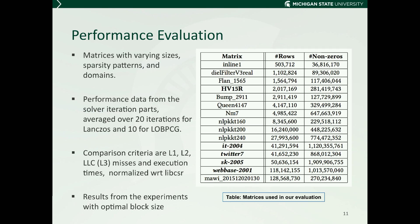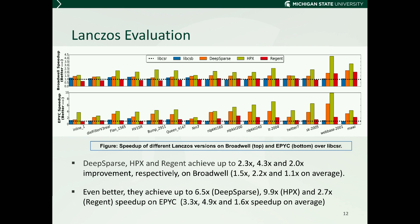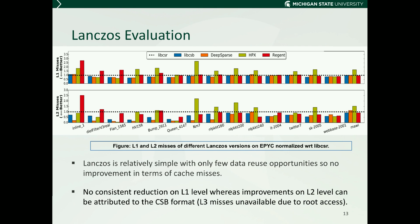We share results from experiments where the optimal block size is employed, which depends on the solver, architecture, runtime system, and matrix type. In Lanczos, all three task parallel versions give decent speedups on both architectures. On Broadwell, DeepSparse, HPX, and Regent achieve up to 2.3x, 4.3x, and 2x improvement over libcsr, although average speedups are somewhat modest. However, AMT models perform better when we go from a multi-core to a many-core architecture. For example, with EPYC, HPX achieves up to 9.9x speedup. However, Lanczos is a relatively simple algorithm; scheduling decisions are simpler and there are fewer data reuse opportunities. As a result, we observed that the task parallel systems often need improvement in cache misses.